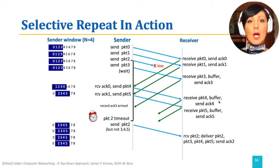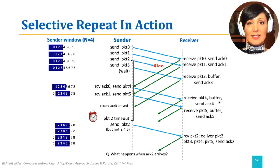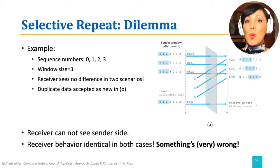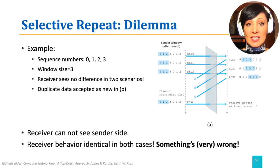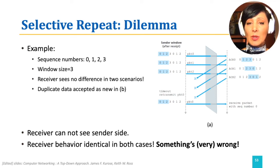But what happens when ACK 2 arrives at the sender? What happens when an acknowledgment arrives at the sender side depends on the correct selection of the window size. Let's explore that with an example.